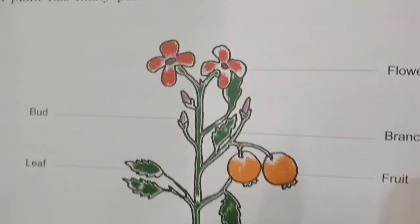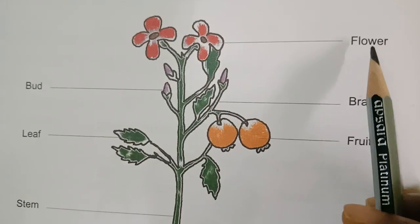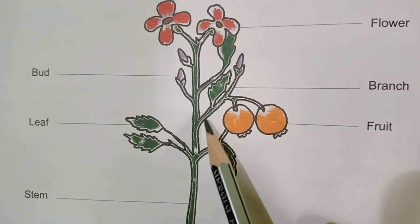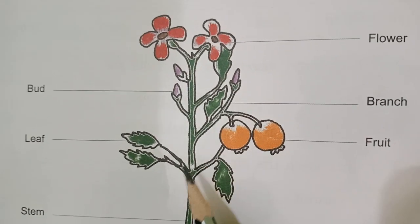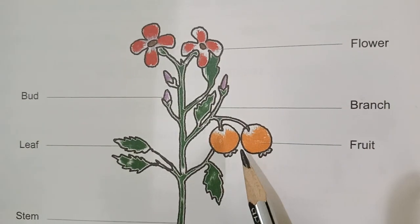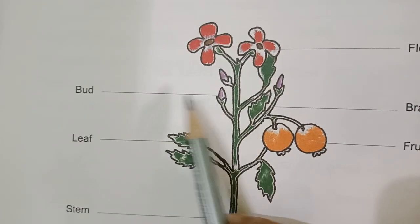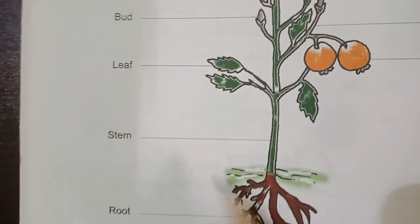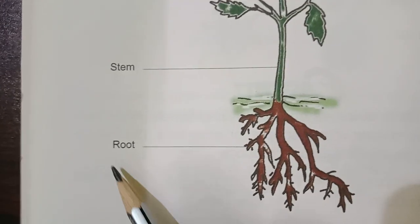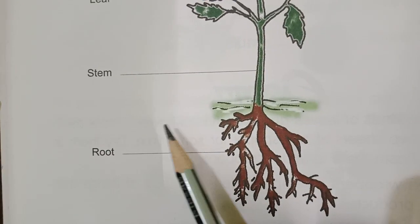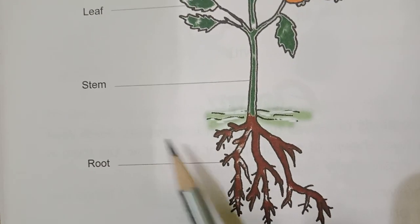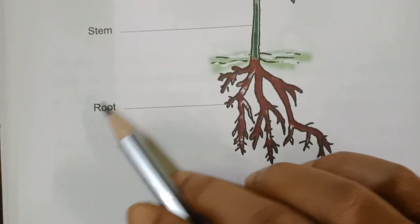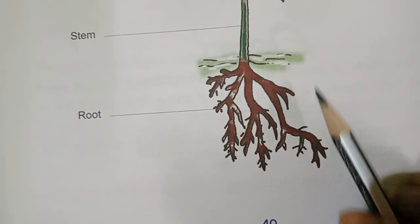It has roots. So this is the flower. This one is branch. This is fruit. This one is leaf and this is stem. And this one is root — it remains inside the soil.